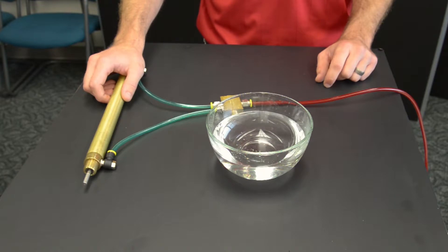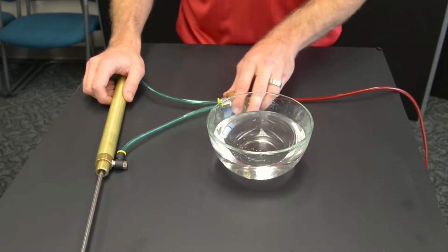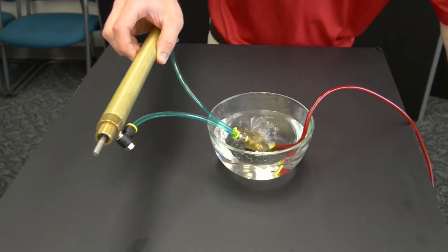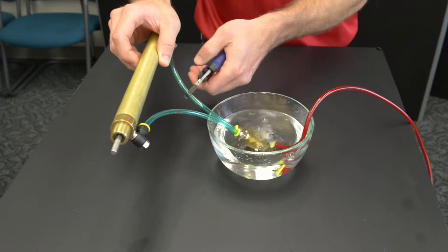Pressurize your system and cycle the valve until it is in the position where the leak is coming out of the exhaust port. As the leak is occurring, pinch the line closest to the exhaust port leaking.